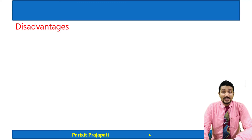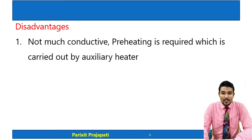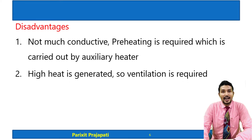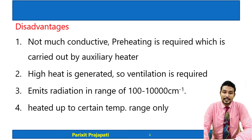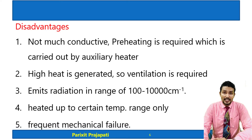The disadvantages of the Nernst Glower source are: it is not very conductive, so it requires pre-heating with the help of an auxiliary heater; high heat is generated so ventilation is required; it emits radiation only in the range of 100 to 10,000 cm⁻¹, so in some cases it is not useful; and there is frequent mechanical failure.